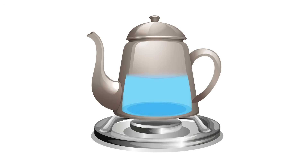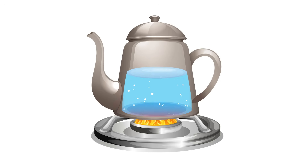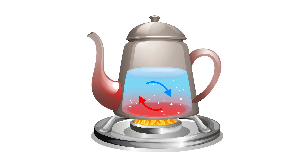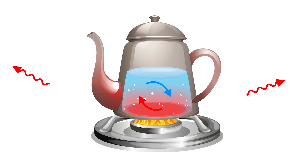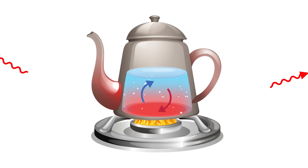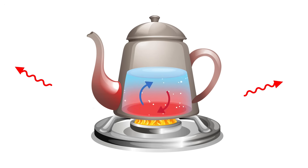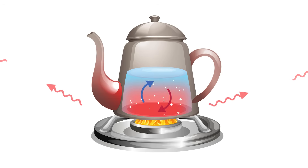We can observe conduction, convection, and radiation when water in a kettle is heated. Thermal energy moves through the metal to the water by conduction. Thermal energy moves around the water through convection. And finally, the heat leaves the kettle and is transferred to its surroundings by radiation. I hope you had fun learning about heat.